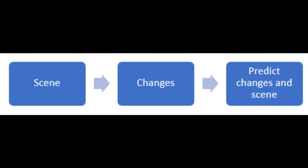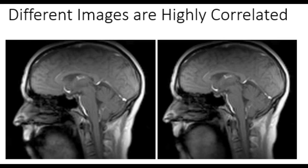This is similar to the way computers can understand how to form images from data without collecting all of the data for each image. Each image in the video is correlated to each other because they are mostly the same. We do not need to know information about every single pixel in every single image to understand one image or the whole video. We can use the small amount of data we acquire to form all of the images if the images are very similar.